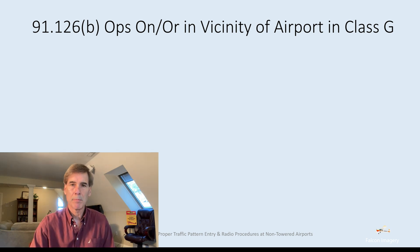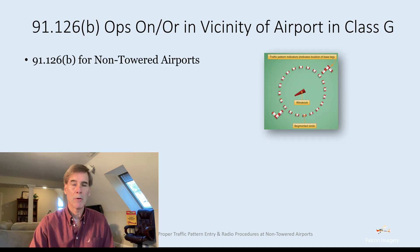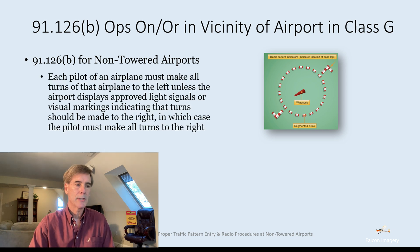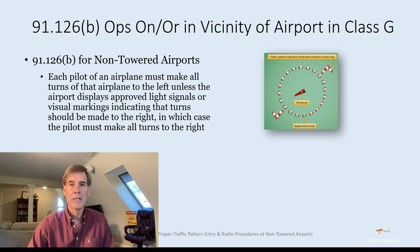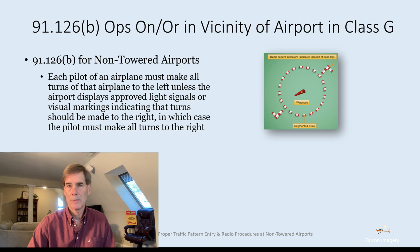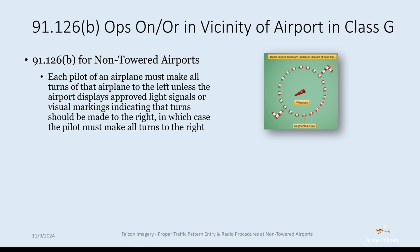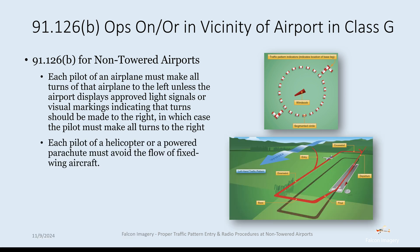Looking at FAR 91.126 Section B, ops on or in the vicinity of a Class G airport — each pilot of an airplane must make all turns to the left unless the airport displays approved light signals or visual markings indicating turns should be made to the right. You can find that information in the chart supplement, or if you're over the airport, look at the segmented circle to see which way traffic is flowing. Each pilot of a helicopter or powered parachute must avoid the flow of fixed-wing aircraft.